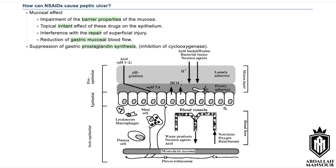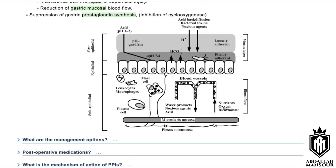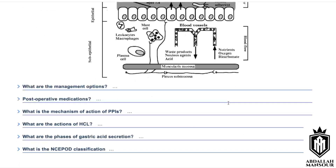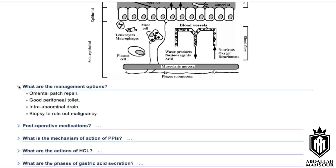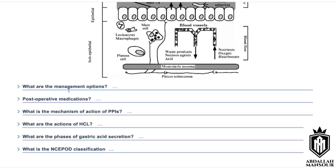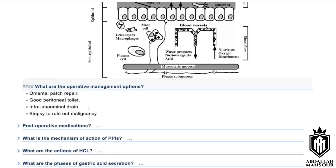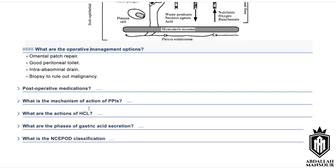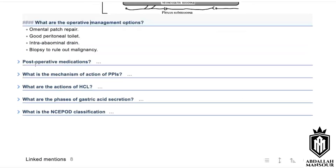What are the management options for this patient with perforated peptic ulcer? The intraoperative management includes an omental patch repair and taking a biopsy from the peptic ulcer to rule out malignancy, plus placement of an intra-abdominal drain.